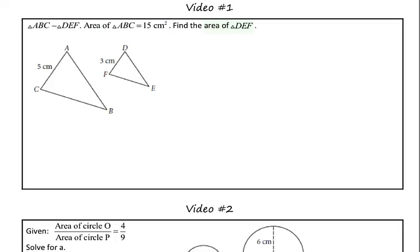We are looking to find the area of triangle DEF. So in the previous investigation, you learned a relationship between the ratio of the sides and the ratio of the areas of similar polygons.